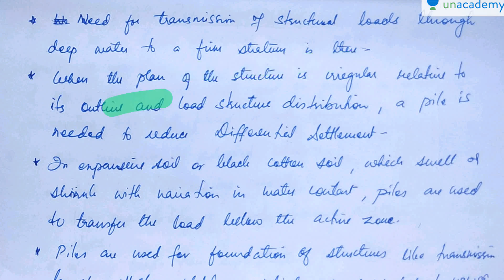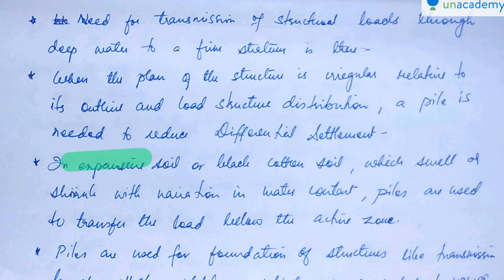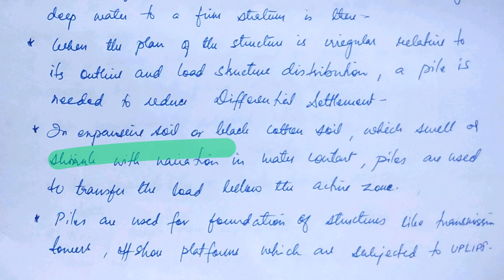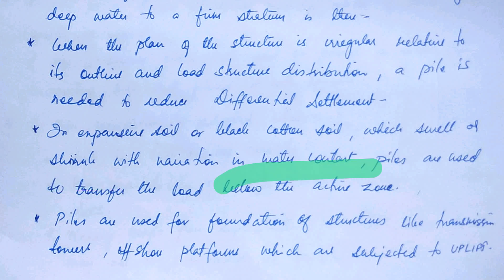Or when the plan of the structure is irregular relative to its outline and load distribution is uneven, a pile is needed to reduce differential settlement. Pile foundation is also provided in expansive soil or black cotton soil that swells or shrinks with variation in water content, and piles are used to transfer the load below the active zone.